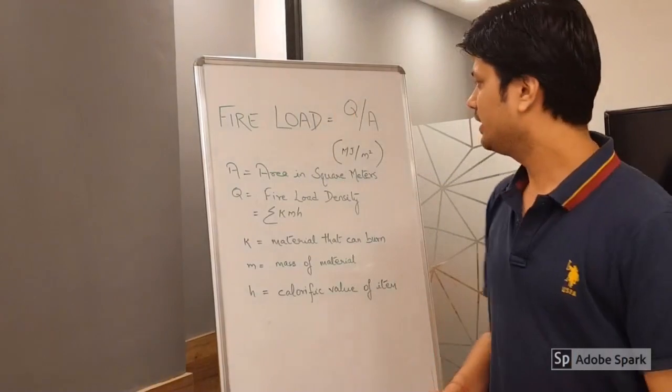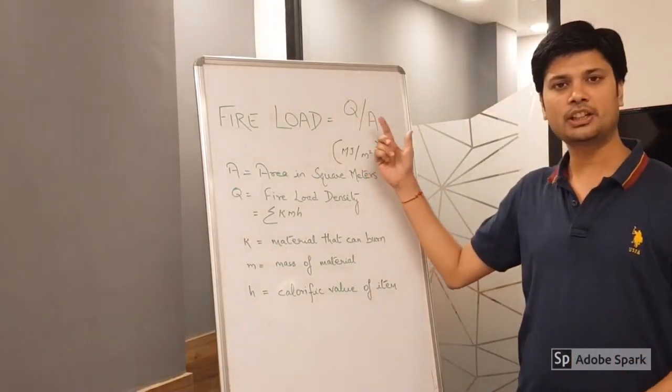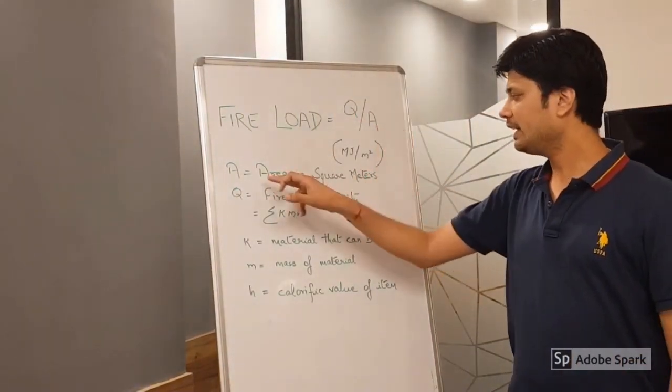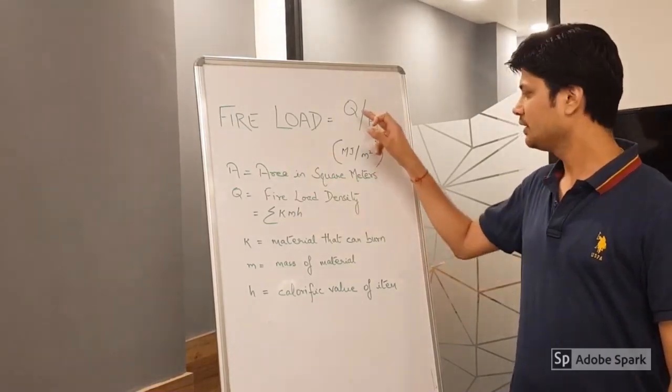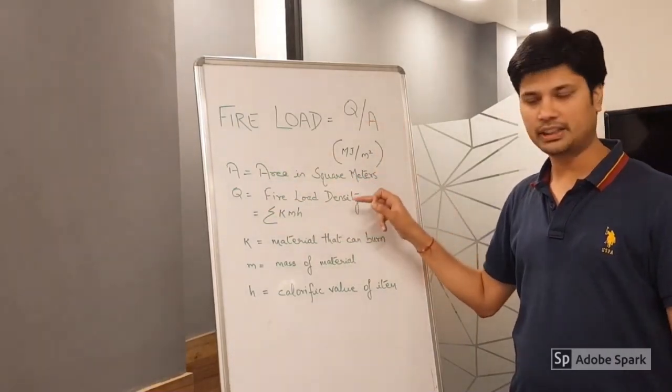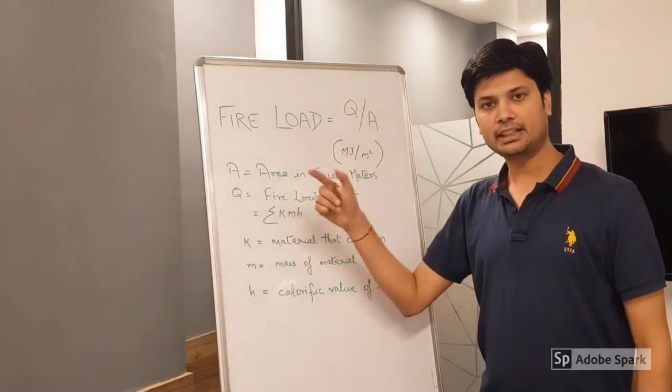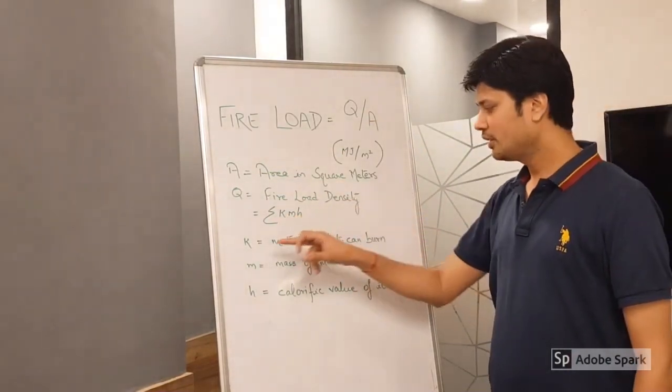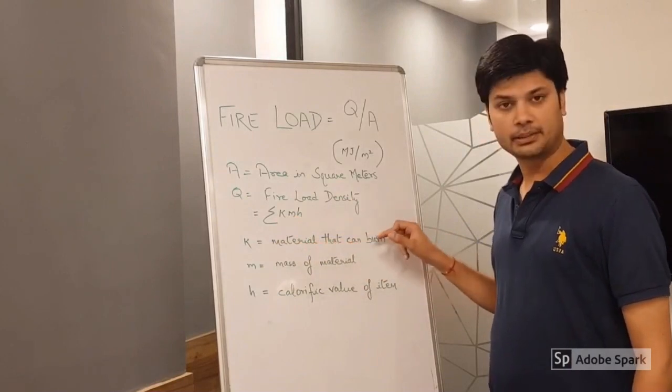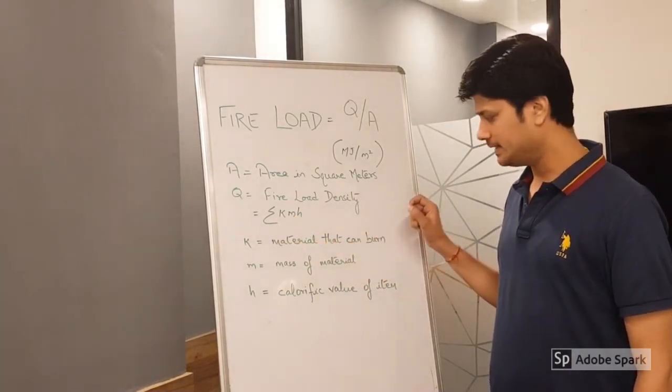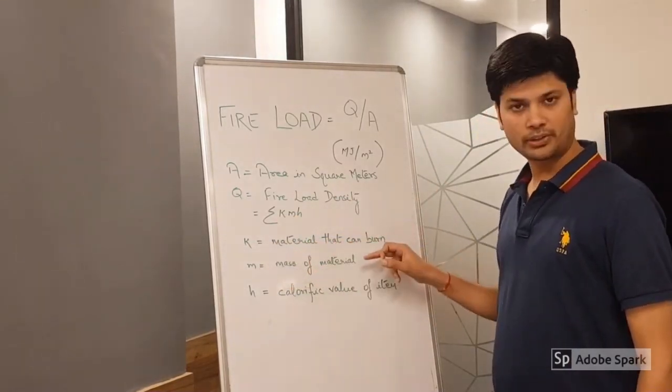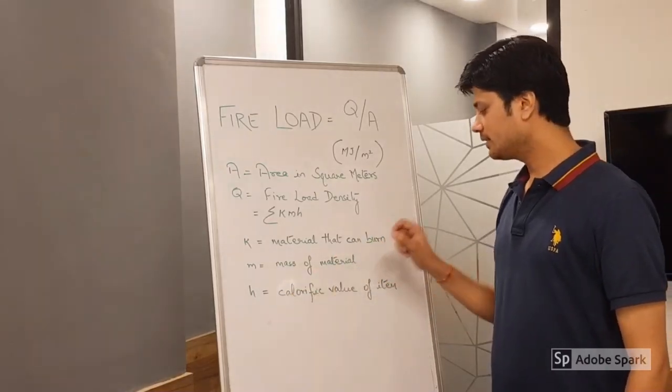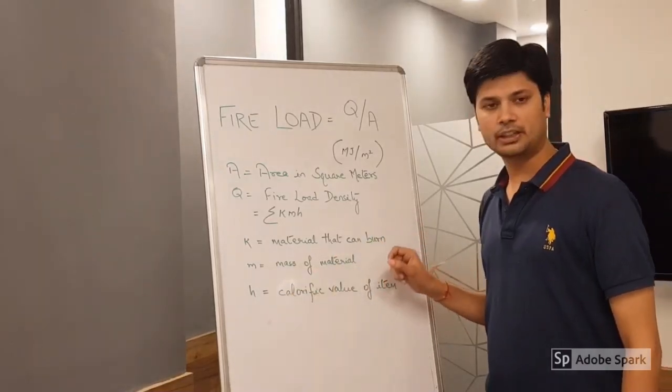How do we calculate fire load? We calculate by using the formula Q/A, where A is the area in square meters and Q is fire load density. Now, fire load density is calculated as summation of k×m×h, where k is material that can burn, m is mass of that material, and h is calorific value of fire.